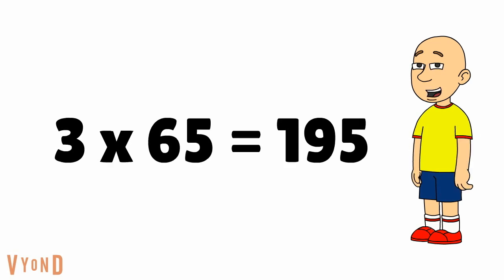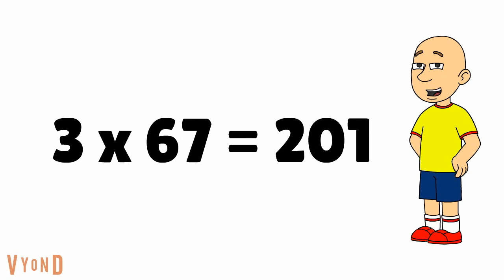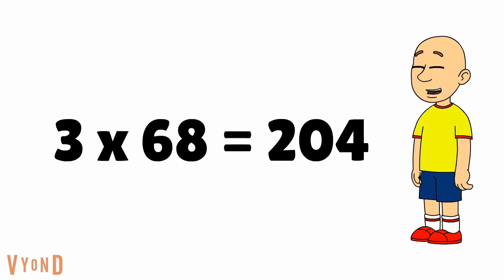3 times 65 equals 195. 3 times 66 equals 198. 3 times 67 equals 201. 3 times 68 equals 204.